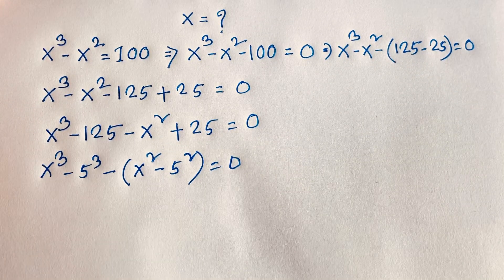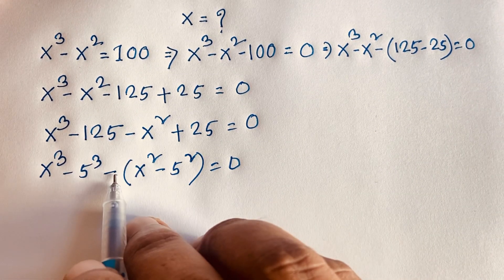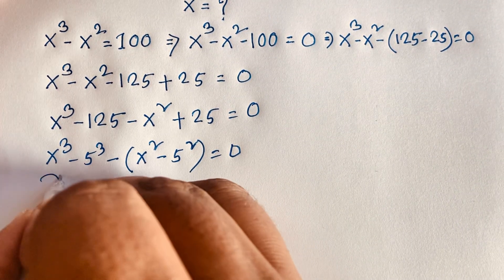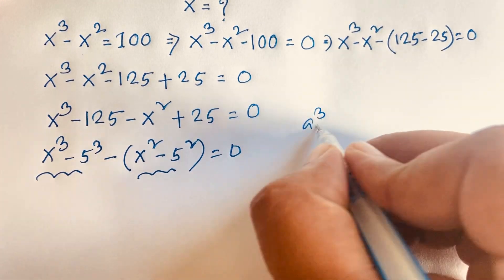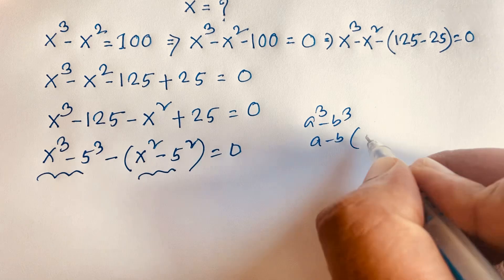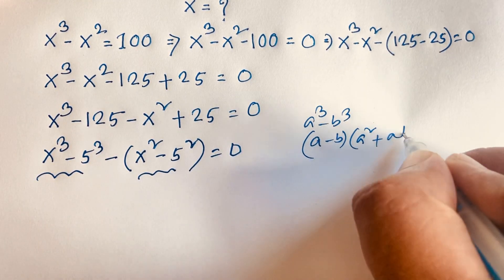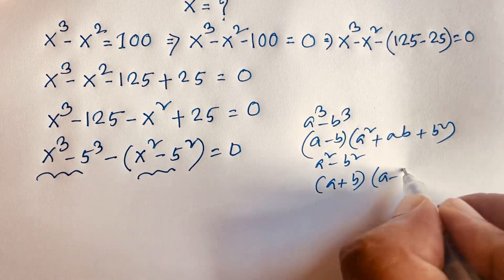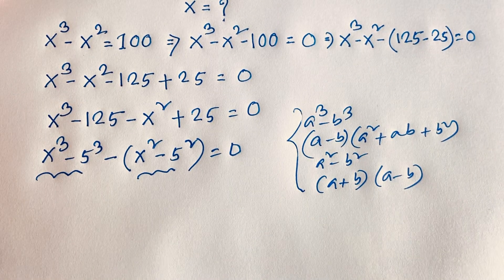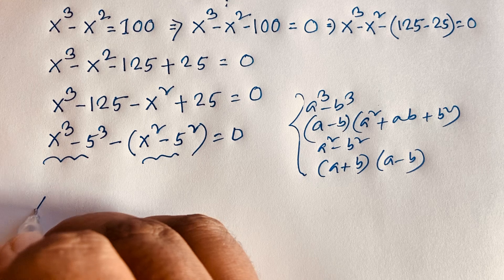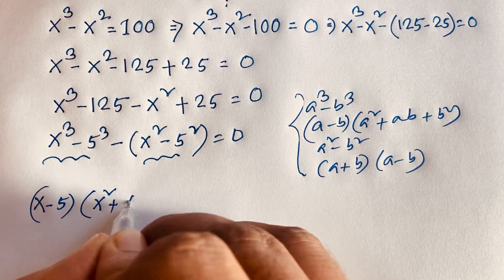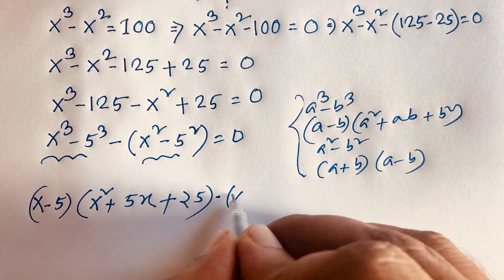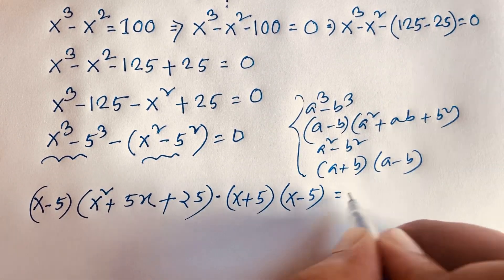Now I apply two algebraic identities. The first is a³ minus b³ equals (a minus b)(a² + ab + b²), and the second is a² minus b² equals (a + b)(a minus b). Using these, x³ minus 5³ becomes (x minus 5)(x² + 5x + 25), and minus(x² minus 5²) becomes minus(x + 5)(x minus 5). Setting this equal to 0.